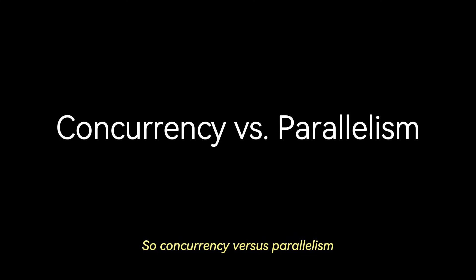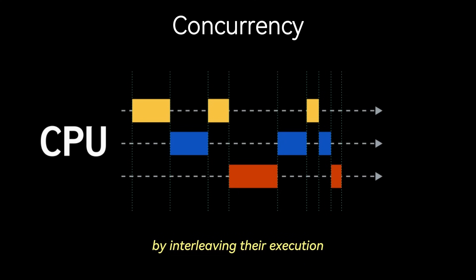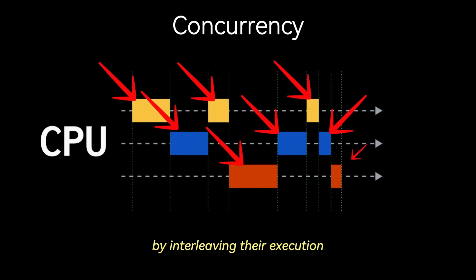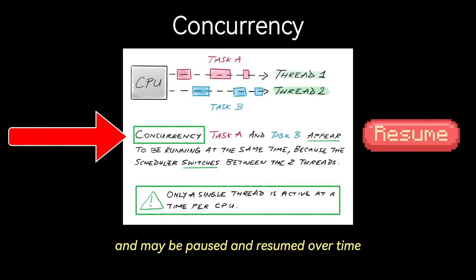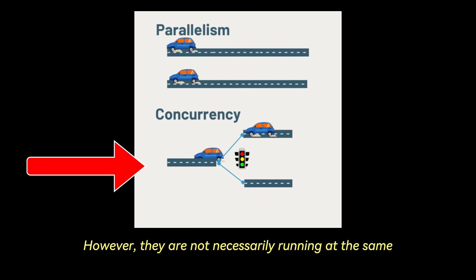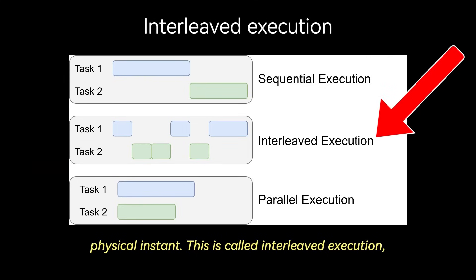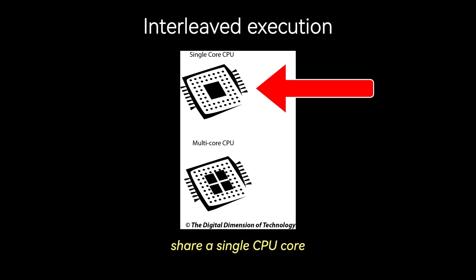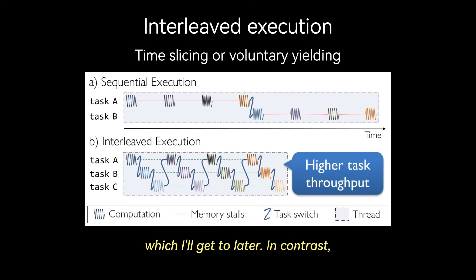So, concurrency vs. parallelism. Concurrency refers to a program's ability to handle multiple tasks by interleaving their execution. These tasks progress independently and may be paused and resumed over time. However, they are not necessarily running at the same physical instant. This is called interleaved execution, where multiple logical threads of control share a single CPU core. They do this through time slicing or voluntary yielding, which I'll get to later.